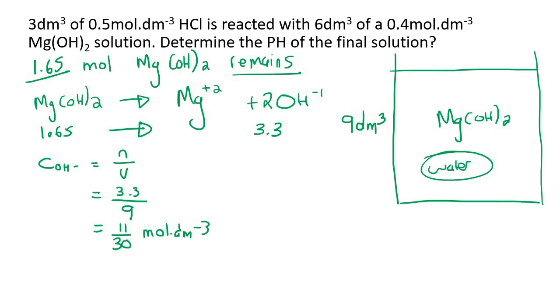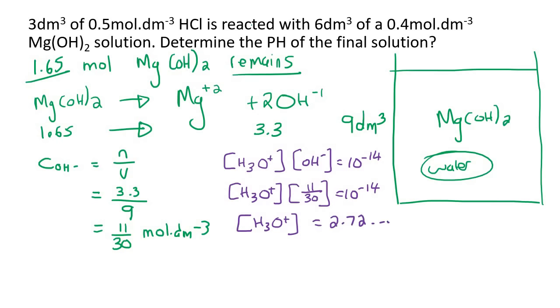Now we can use the Kw formula, which is H3O positive multiplied by OH negative, and that always equals 10 to the negative 14. So we could say, we don't know what the H3O concentration is, but the OH minus is 11 over 30, and that's equal to 10 to the negative 14. So the H3O concentration would then be equal to, it's a long answer, so I'm not going to write all of it, but it's going to be 2.727272 times by 10 to the negative 14 moles per decimeter.